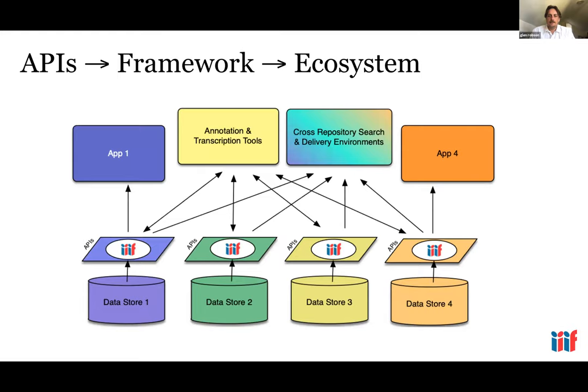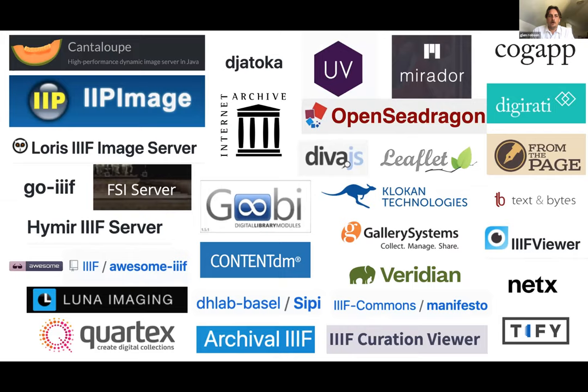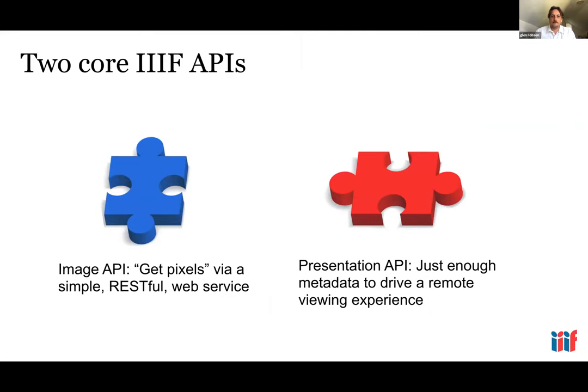The full power of IIIF really comes into effect across institutions that have adopted it, where normalization brought by the IIIF APIs allows content to be worked with across repositories — searching across repositories, seeing another institution's annotations, or opening an institution's images in a separate IIIF-compliant app. This gives users the power to make their own cross-institution collections of digital material and use many IIIF open source and commercial software solutions.